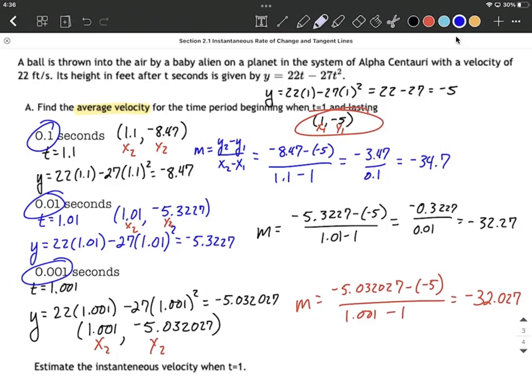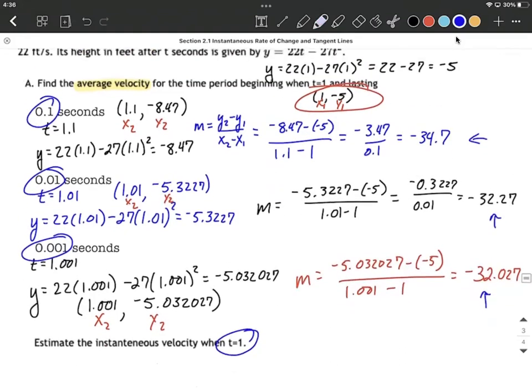So we went from negative 34.7 to negative 32.27 to negative 32.027. So it feels to me like we're creeping closer and closer to what the instantaneous velocity would be. I mean, 0.001 seconds is almost right at one second, right? It's only 0.001 seconds later than the one we really care about at t equals 1. So I would estimate this one is going to be right about negative 32.